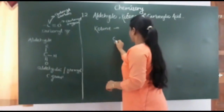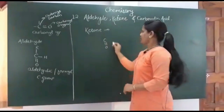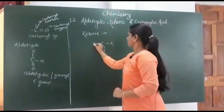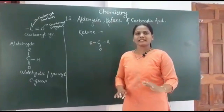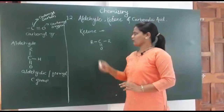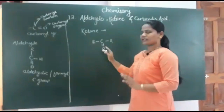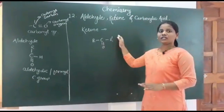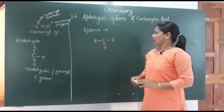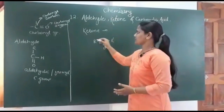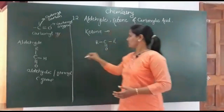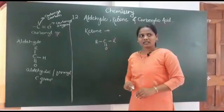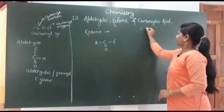In ketone, I will write C double bond O. The remaining two valencies of the carbon are satisfied by alkyl groups. Both alkyl groups can either be identical or different — if both are the same, they are represented as R and R; if different, one is distinguished as R'. The C double bond O is the carbonyl group, C is the carbonyl carbon, and O is the carbonyl oxygen. These are the alkyl groups.